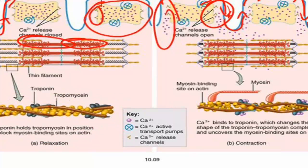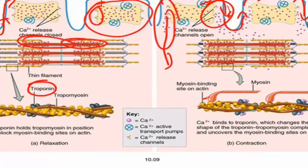However, when calcium is released from the terminal cistern into the cytoplasm, it chemically reacts and bonds to the troponin of the troponin-tropomyosin complex. That chemical reaction creates a shift in the position of the troponin-tropomyosin complex, revealing the myosin binding sites on the actin. So calcium released from the terminal cistern opens up the myosin binding sites on the actin proteins so that the myosin heads can reach out and grab the actin. This is why calcium is so important for muscle contraction — not just for bones and teeth, but for nerve impulse transmission at the chemical synapse and for muscle contraction.